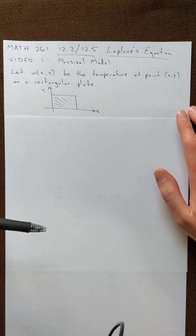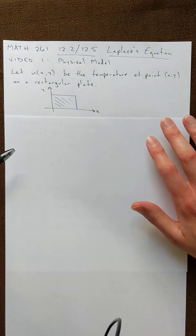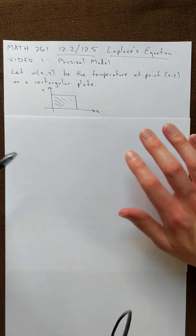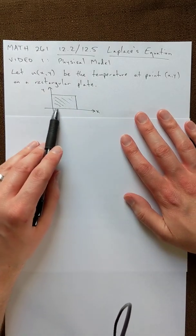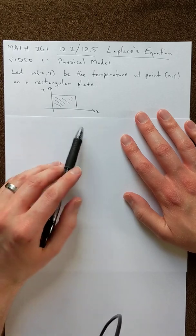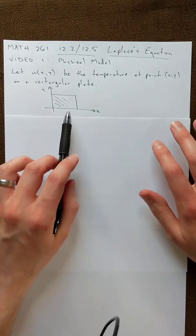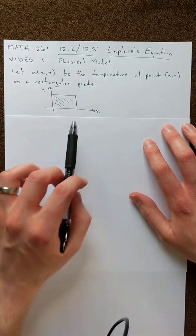So unlike the heat equation and the wave equations that we were writing as u of x,t, so our two variables were x and t, now we're using x and y because we're talking about a two-dimensional surface. We're not interested in time, just interested in the temperature on a particular plate.